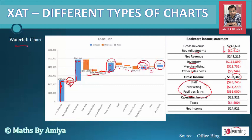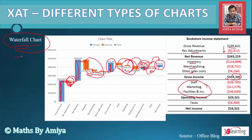You need to understand the Waterfall Chart very carefully. The top values are your revenue, and the other values are the expenses, as per the question. The total expenses are the summation of those values. You can expect a Waterfall Chart in your JAT examination.